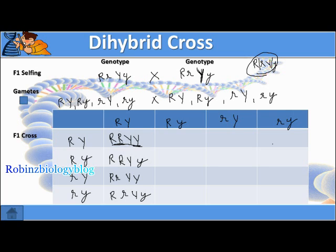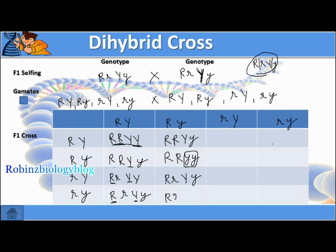In this case the seed is going to be round in shape and yellow in color — round and yellow, round and yellow. Here again R R Y Y, so it's round and yellow. But here it is round and green — that's a new combination. And again round and yellow, and round and green.